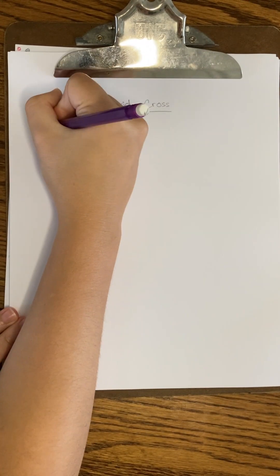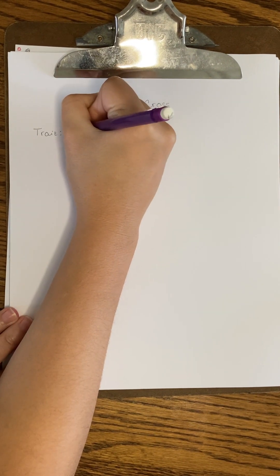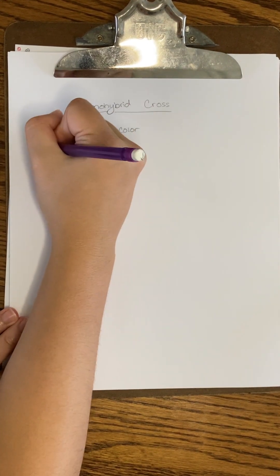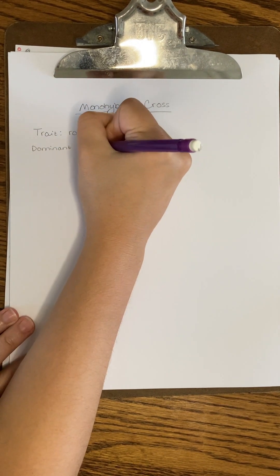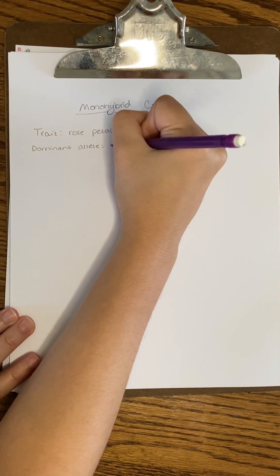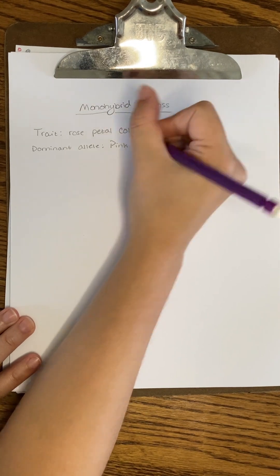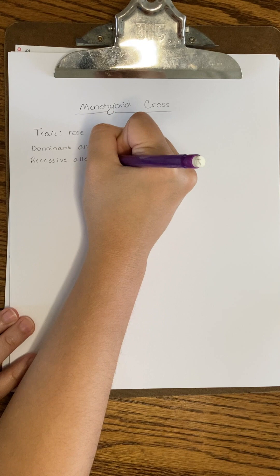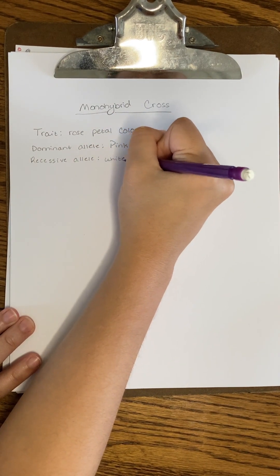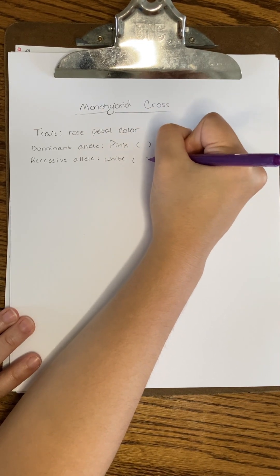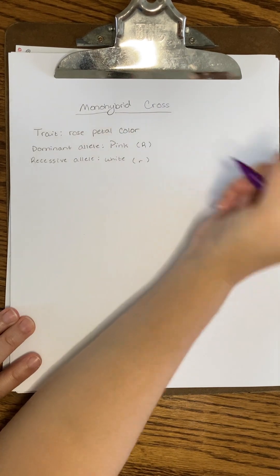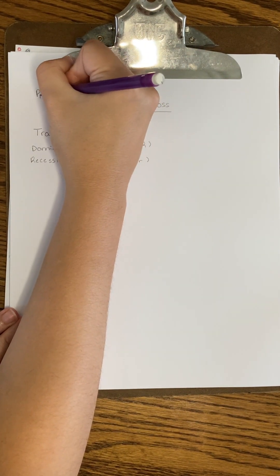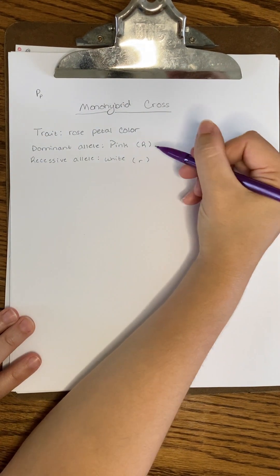Now there are two types of Punnett squares depending on how many different traits you're looking at at one time. We will begin by looking at only one trait at a time, and this is called a monohybrid cross. Let's say the trait we're looking at is rose petal colors. Let's say we're crossbreeding a rose with pink petals with a rose with white petals. And for our example, we will make the dominant trait pink and the recessive trait white. Now it doesn't really matter what letter you choose to represent the allele, but I have found that it's smart to choose a letter whose capital and lowercase versions look very different from one another because there's less chance you're going to mix them up when interpreting your results later. For example, the letter P looks similar enough that if I wasn't careful to keep the sizes consistent, I might mix them up.